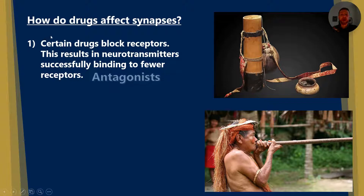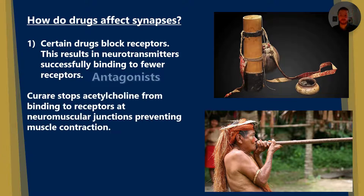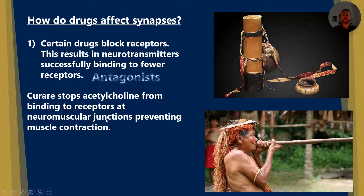So how do drugs affect synapses? Certain drugs can block receptors. These drugs are known as antagonists. This means that fewer neurotransmitters will successfully bind to receptors. Curare is an example of one of these drugs, and it stops acetylcholine from binding to receptors at neuromuscular junctions.